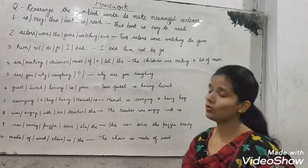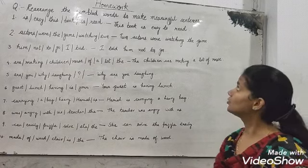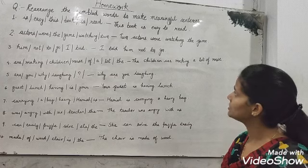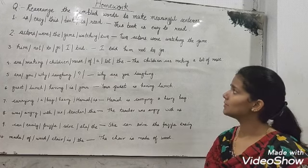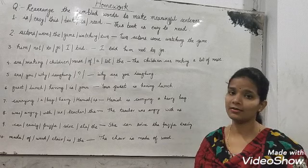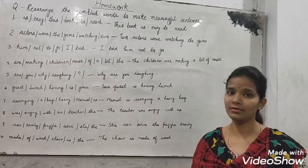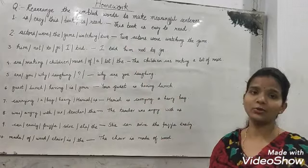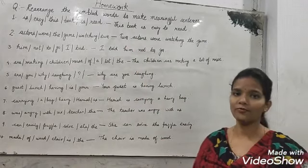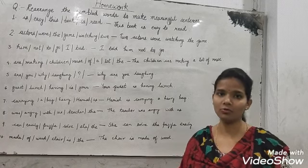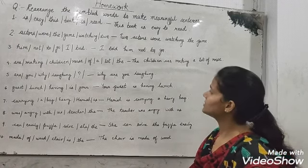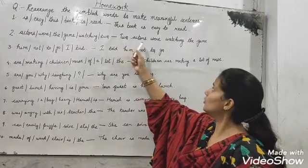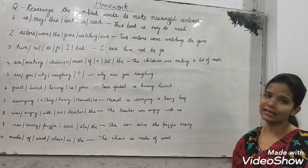I have given you homework to arrange the jumbled words to make a meaningful sentence. The first one was: 'is easy this book to read'. After arranging it, you will get: 'This book is easy to read'. If you have not done your homework, do it now. Now take the second one: after arranging, you will get 'Two actors were watching the game'.